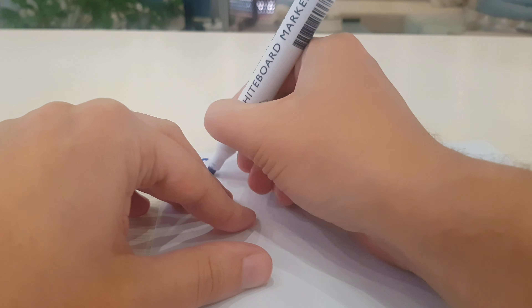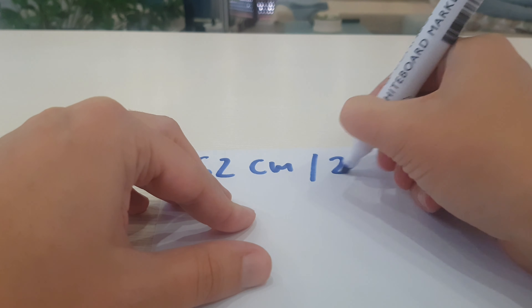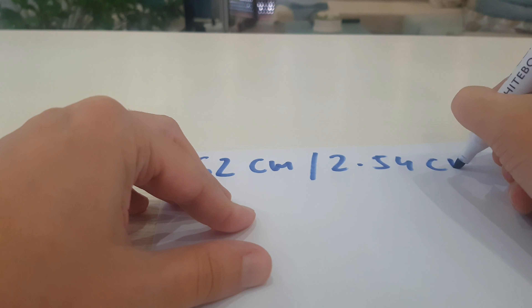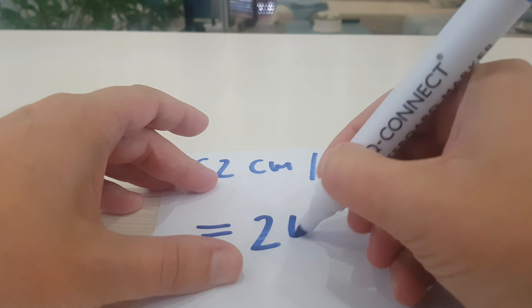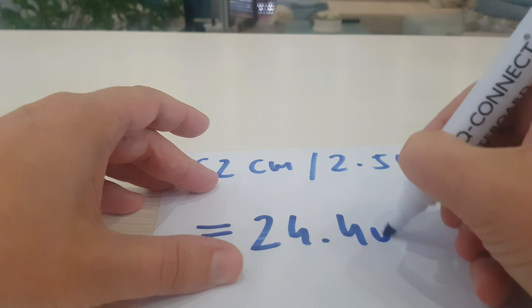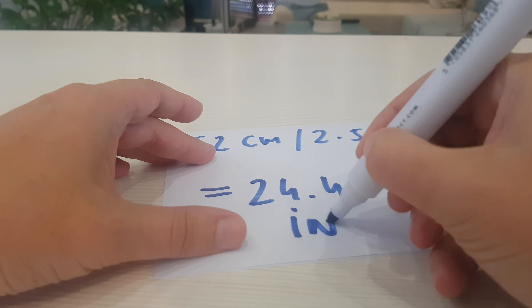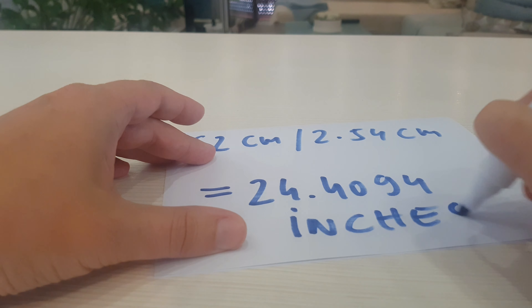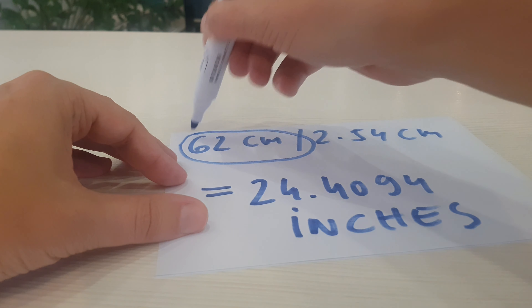We divide 62cm by 2.54cm and the result is 24.4094 inches. Here is the solution again: 62cm equals 24.4094 inches.